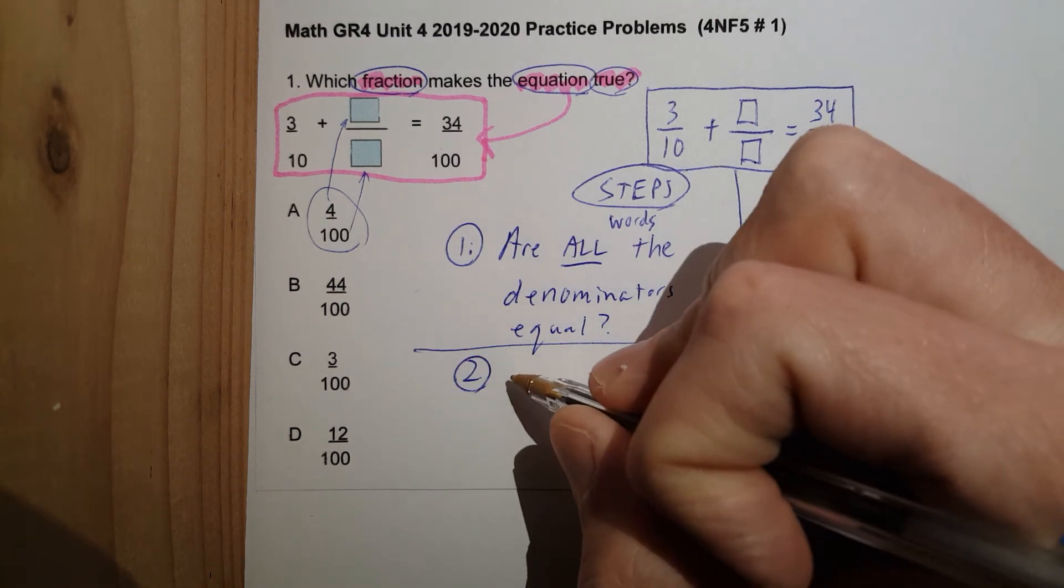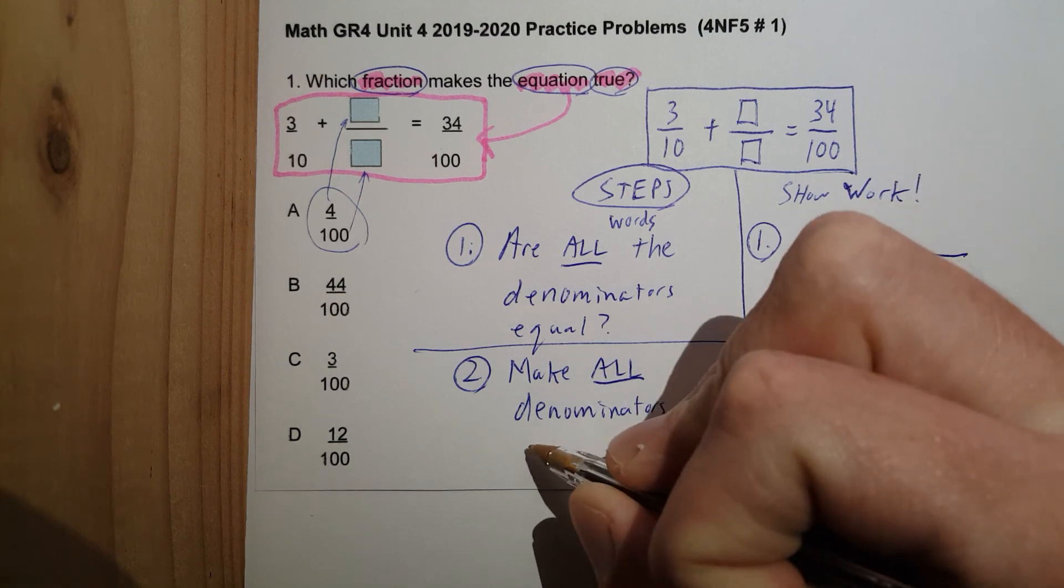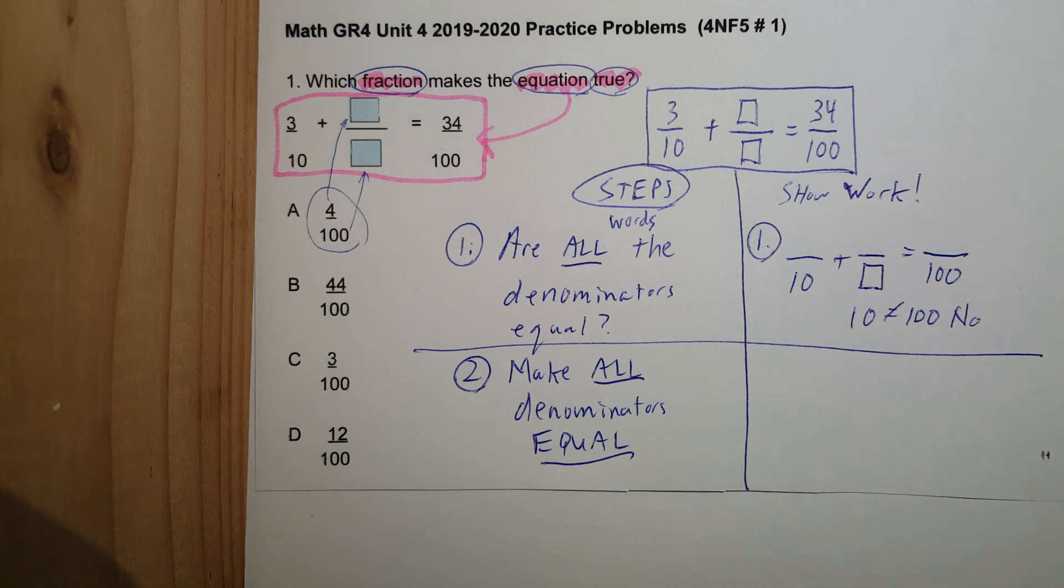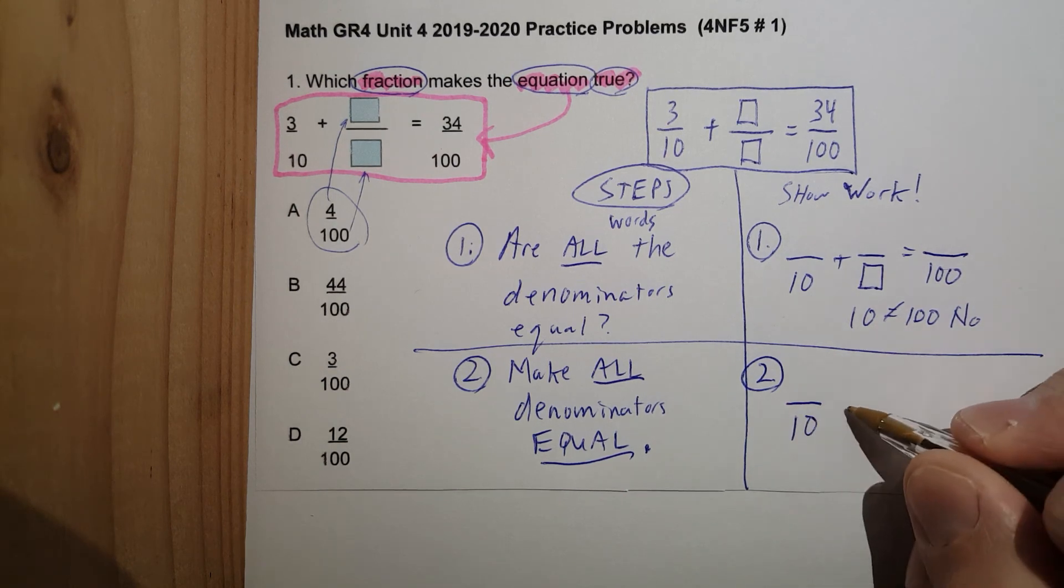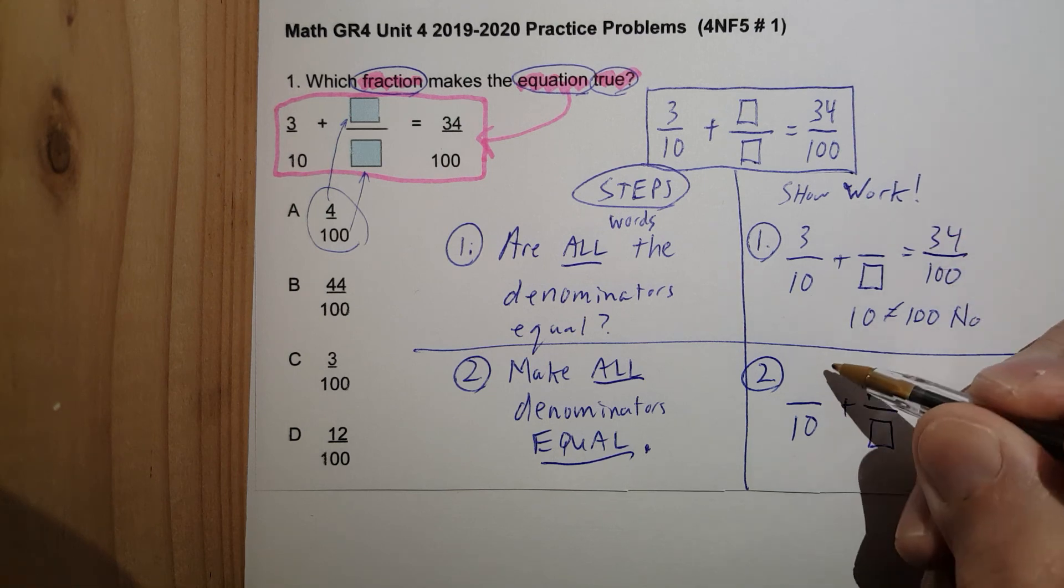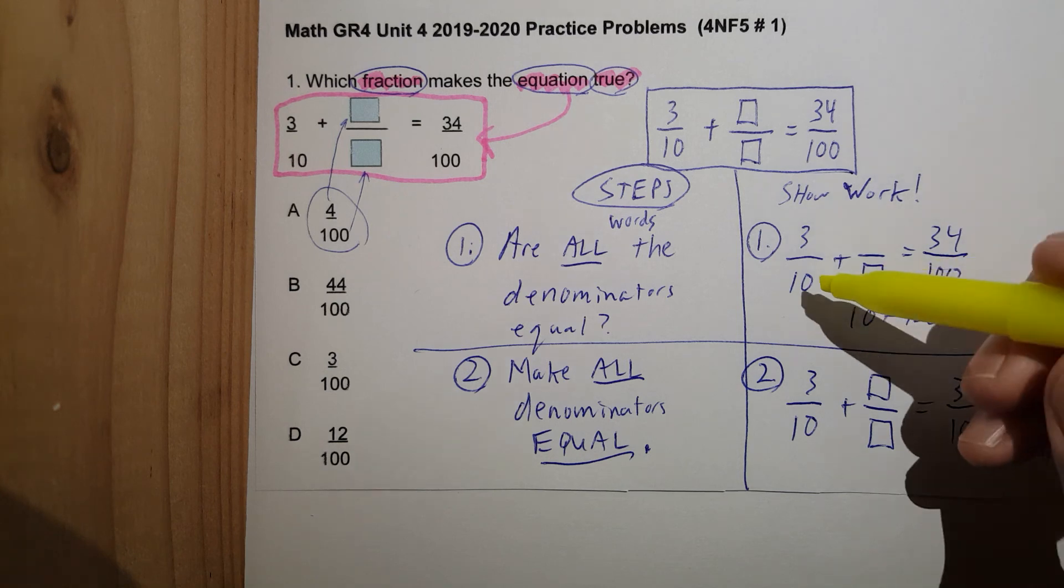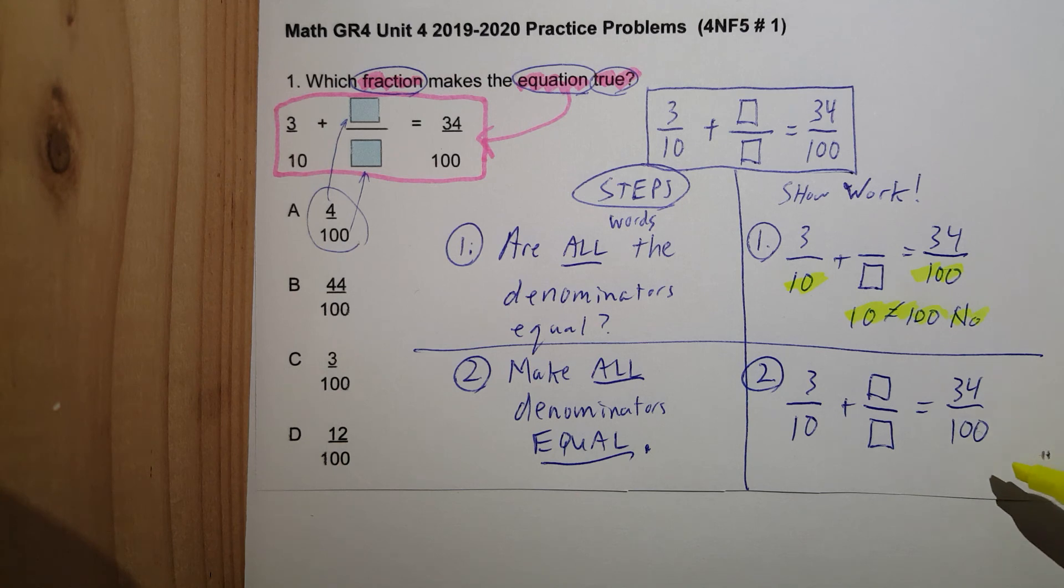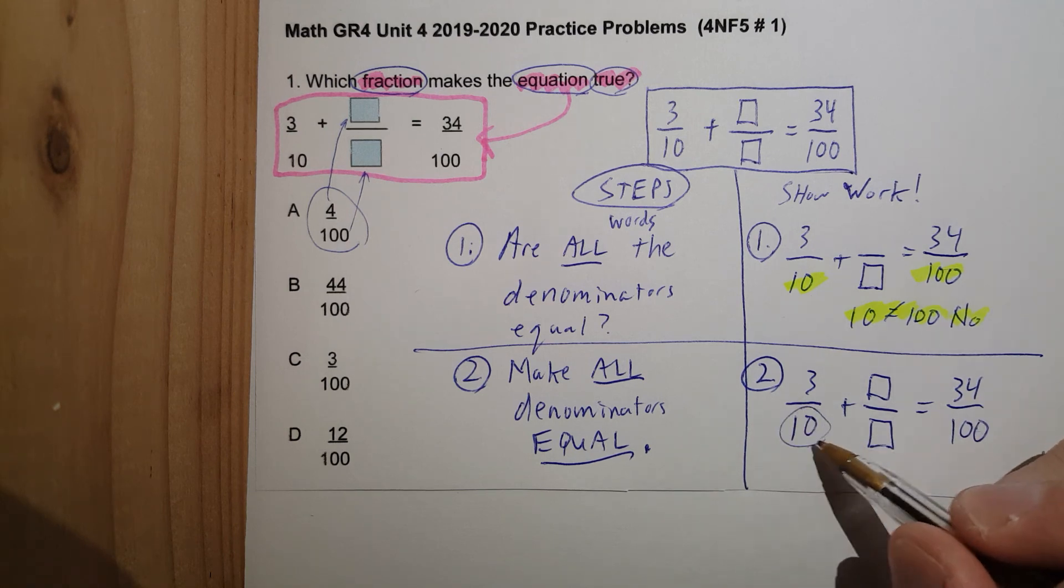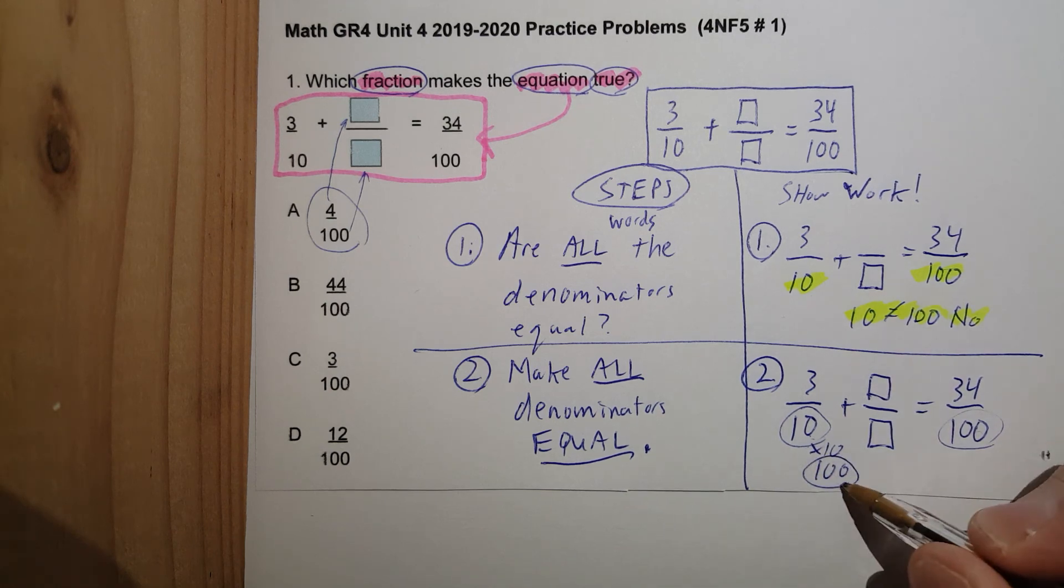So, for step two, make all denominators equal. So, over here, I have ten plus unknown number, unknown number. Let's not forget the three. Let's not forget that 34. I'm going to put the three back up there. Is equal to 34 over 100. Now, I'm going to make all of these 100. Why? Making numbers to 100 is super simple. Because I just multiply by 10. And that's what I love about the standard. It should be very easy. Notice how I have 10 and 100.